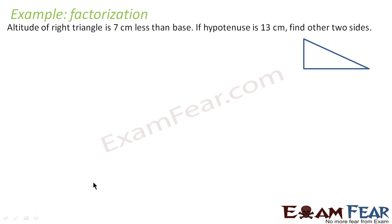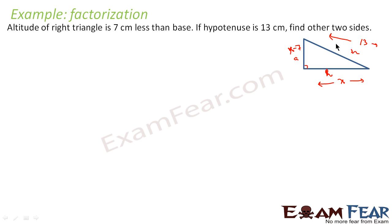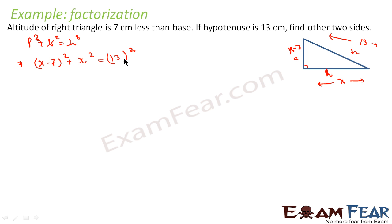Let's take the next example: the altitude of a right triangle is 7 cm less than the base. In this right triangle, this is the altitude, this is the base, and this is the hypotenuse. The hypotenuse is 13 cm. Let the base be x; then the altitude is x minus 7, which is 7 cm less than the base. Now using the Pythagoras theorem: p squared plus b squared equals h squared, so (x minus 7) squared plus x squared equals 13 squared.